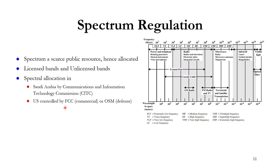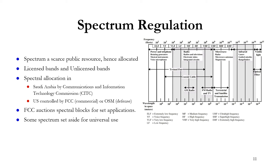In the US, the spectrum is controlled by the Federal Communications Commission (FCC) for commercial applications and by OSAM for defense. The FCC auctions spectral blocks, and similarly CITC does so in Saudi Arabia — whoever pays more, while respecting regulations, is granted the spectrum. Some spectrum is set aside for universal use. At the global level, the worldwide spectrum is controlled by the ITU — the International Telecommunication Union. Regulation is a necessity, not a luxury, because wireless systems across neighboring countries cause interference that must be managed.